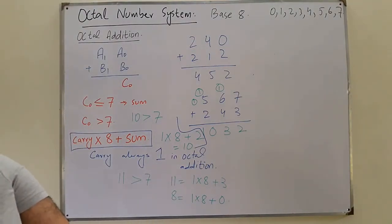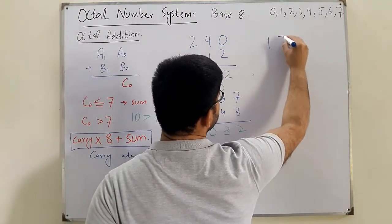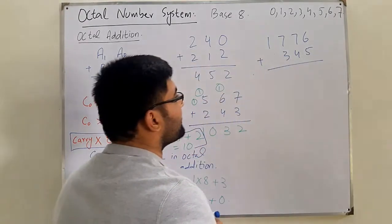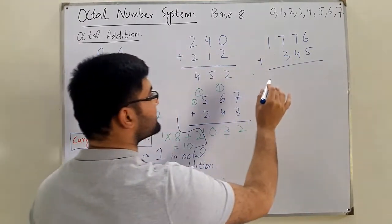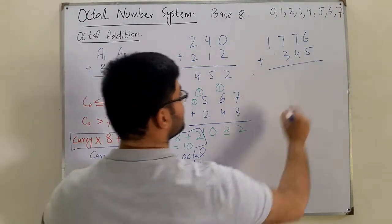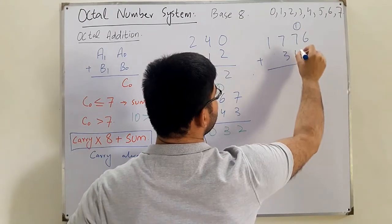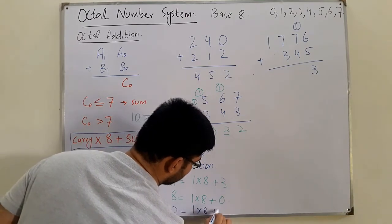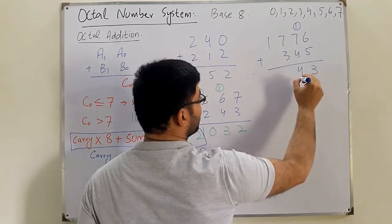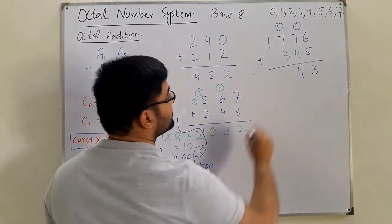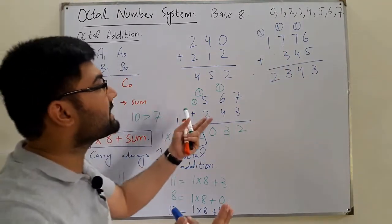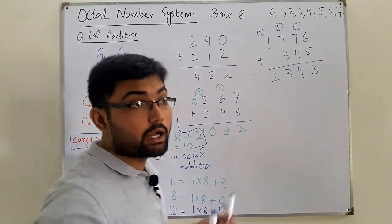Another example: 1776 plus 345. 6 plus 5 is 11 — greater than 7 — so the sum is 3 and carry is 1. Then 7 plus 4 is 11, plus 1 carry is 12: 1 × 8 + 4, so sum is 4 and carry is 1. Then 7 plus 3 is 10, plus 1 carry is 11: sum is 3, carry is 1. Bringing down: the answer is 2343.